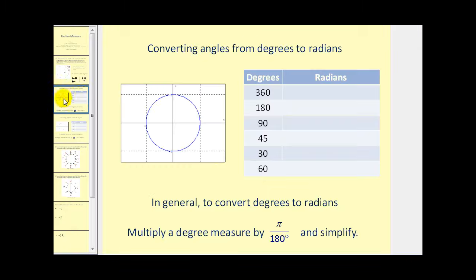Let's convert some angles in degrees to radians. We multiply the degree measure by pi over 180 degrees and then simplify. Some of these we should already know by definition: 360 degrees is equal to two pi radians, and 180 degrees is half of 360 degrees, so half of two pi would be pi radians.